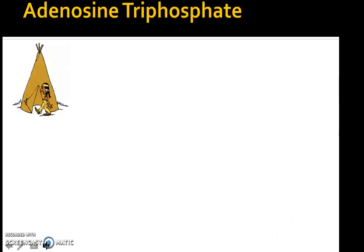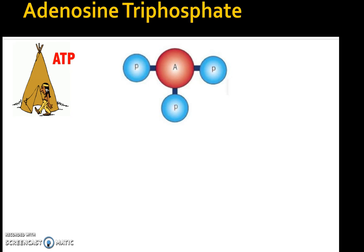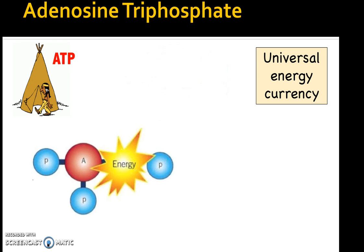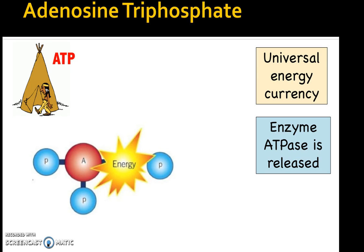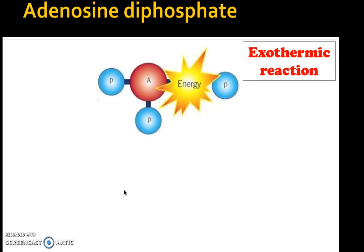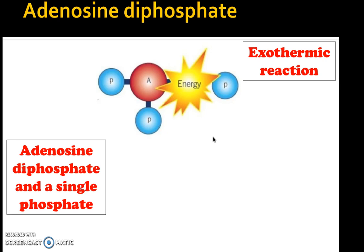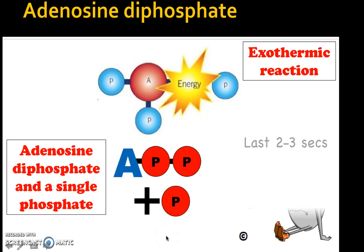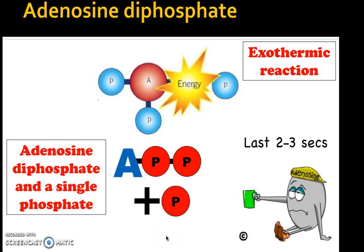First of all, we need to remember where we left off from last time. We were talking about adenosine triphosphate, which is the compound of three phosphates and the adenosine. It's our universal energy currency — our only usable energy. The enzyme ATPase is present, which creates the breaking away of the phosphate, giving us the exothermic reaction and the energy we need to make our muscles contract. Once we've got that exothermic reaction, we now have adenosine diphosphate. The only usable source of energy we have is adenosine triphosphate, so we need to work out how we're going to move from adenosine diphosphate plus the single phosphate back to adenosine triphosphate.